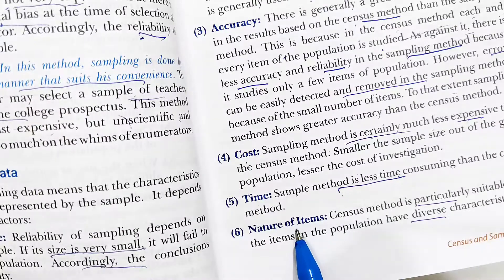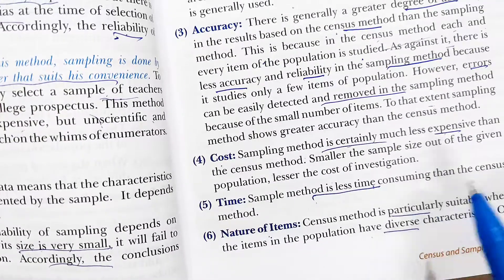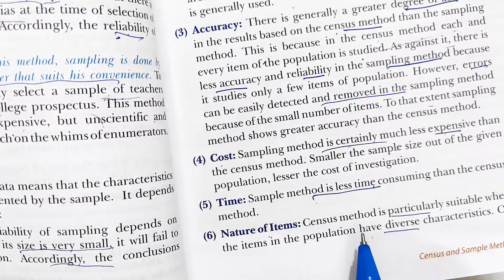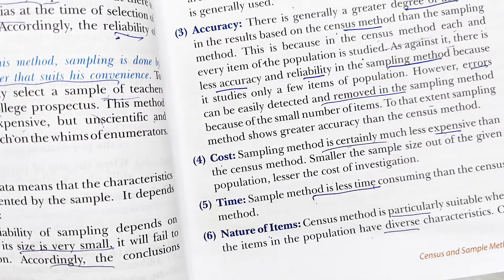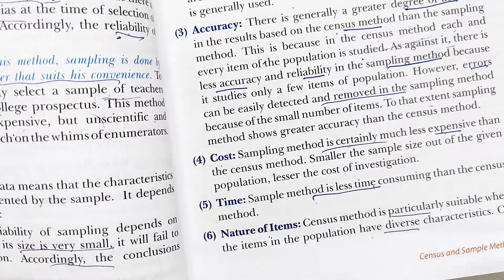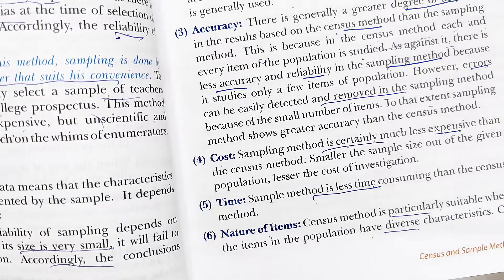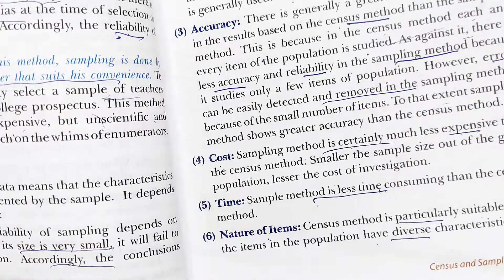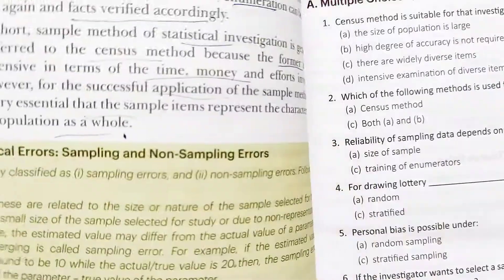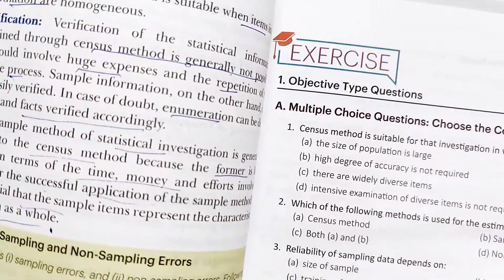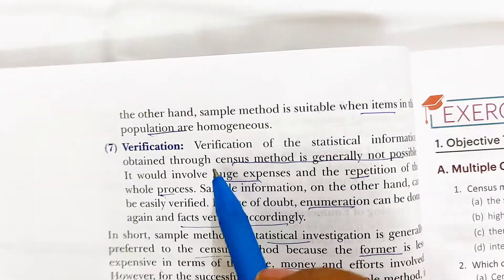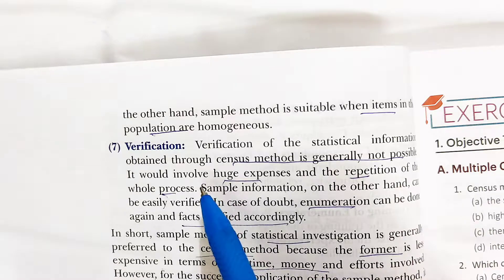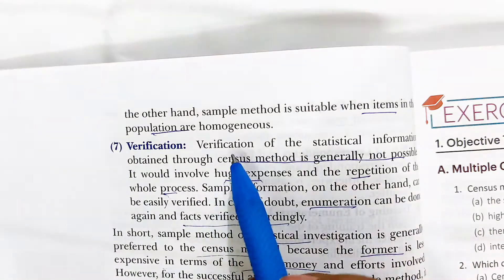Nature of items: the census method is suitable when the items of the population have wide variety. When there is variety of items, the investigator has to collect data from each and every item, making it difficult to draw a representative sample. On the other hand, the sampling method is very much suitable when the population has the same type of items — that is, homogeneity.